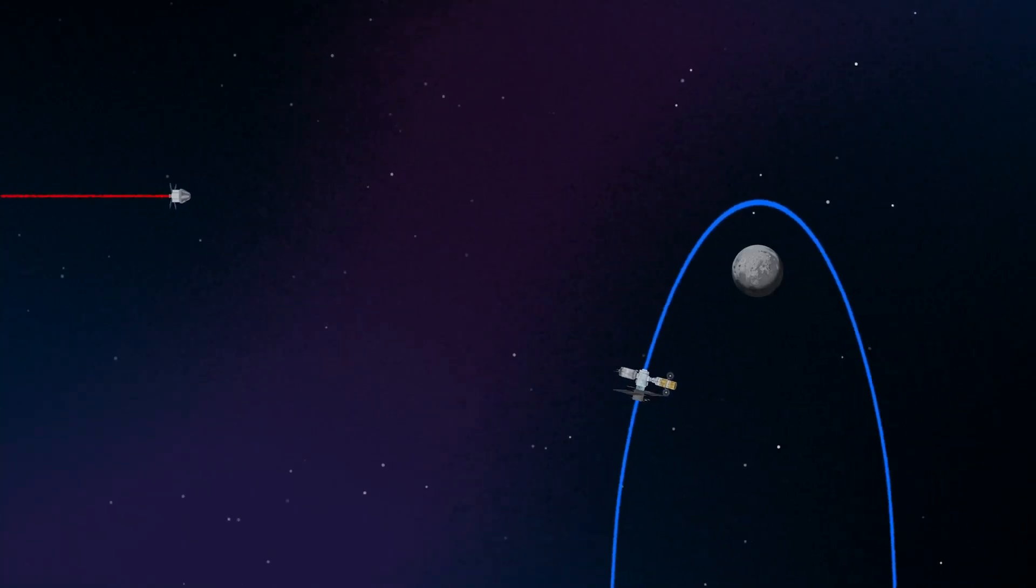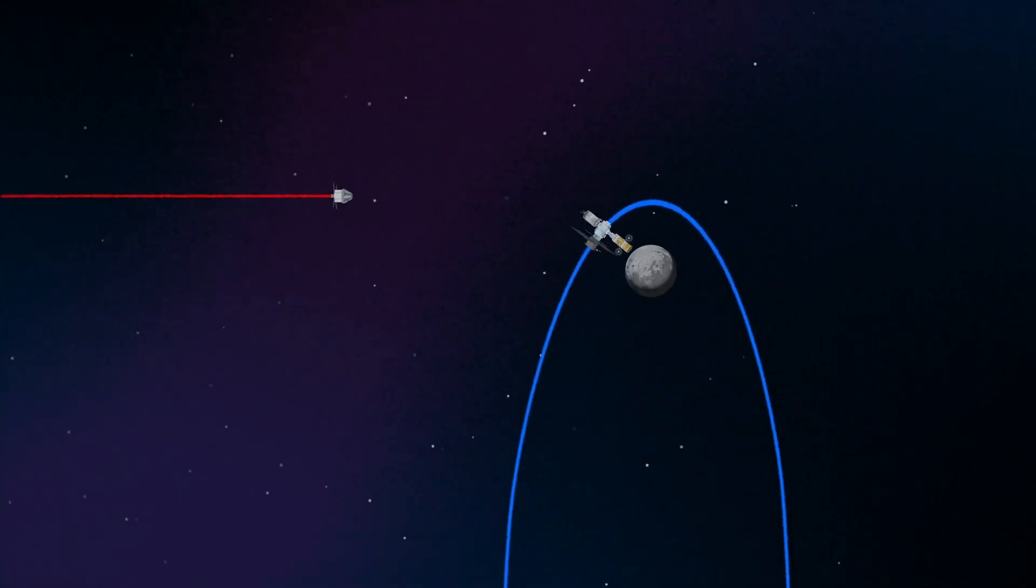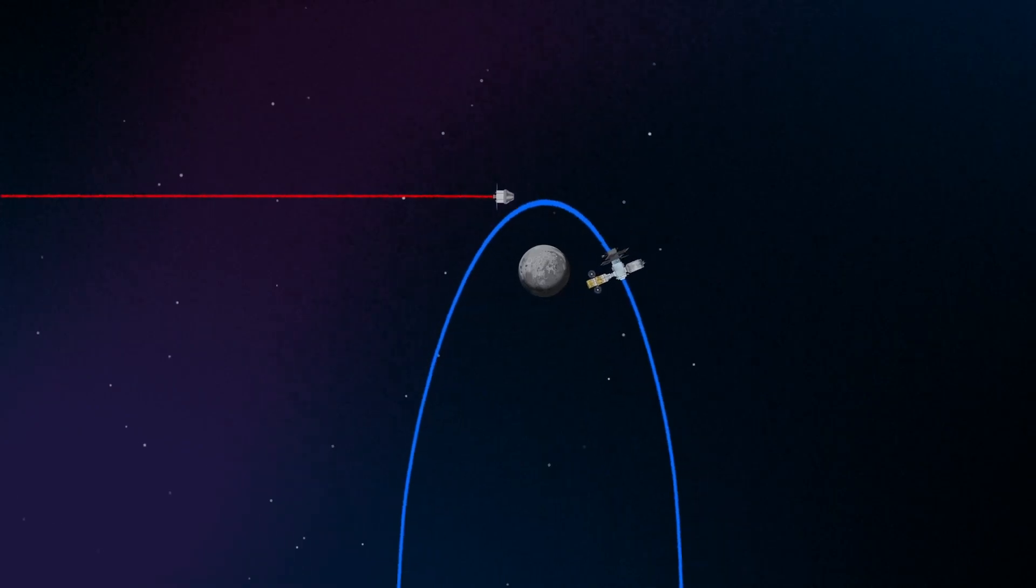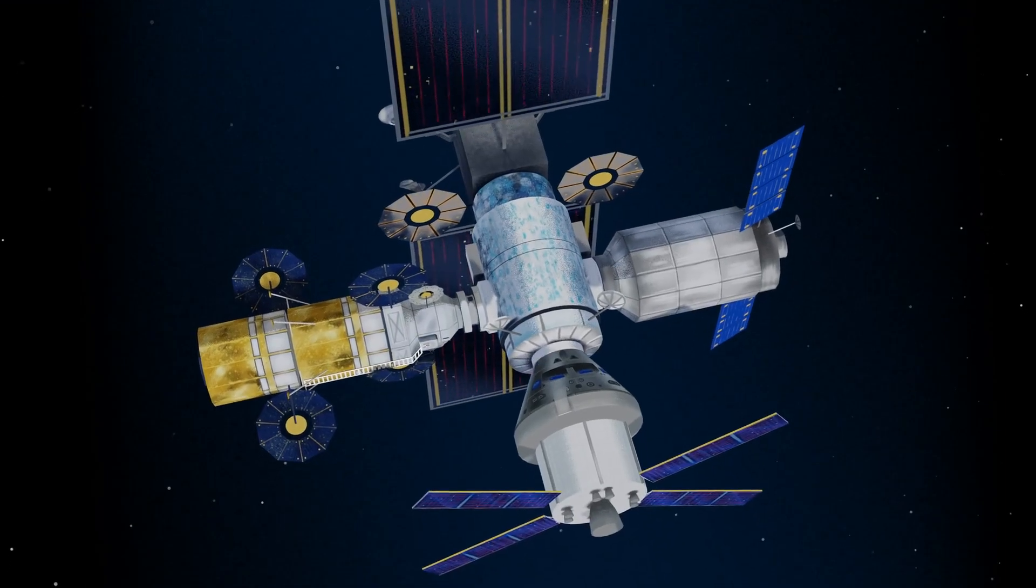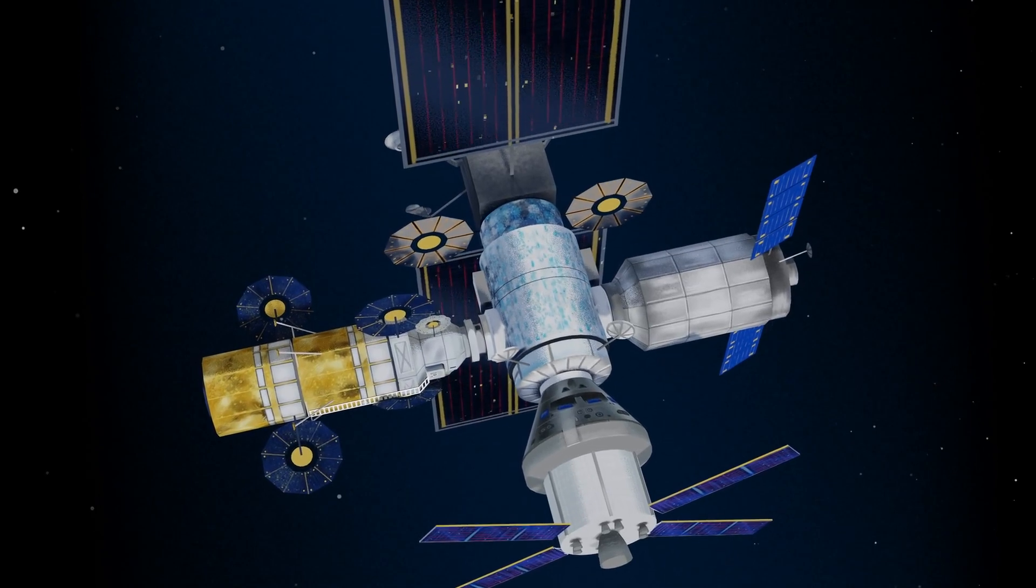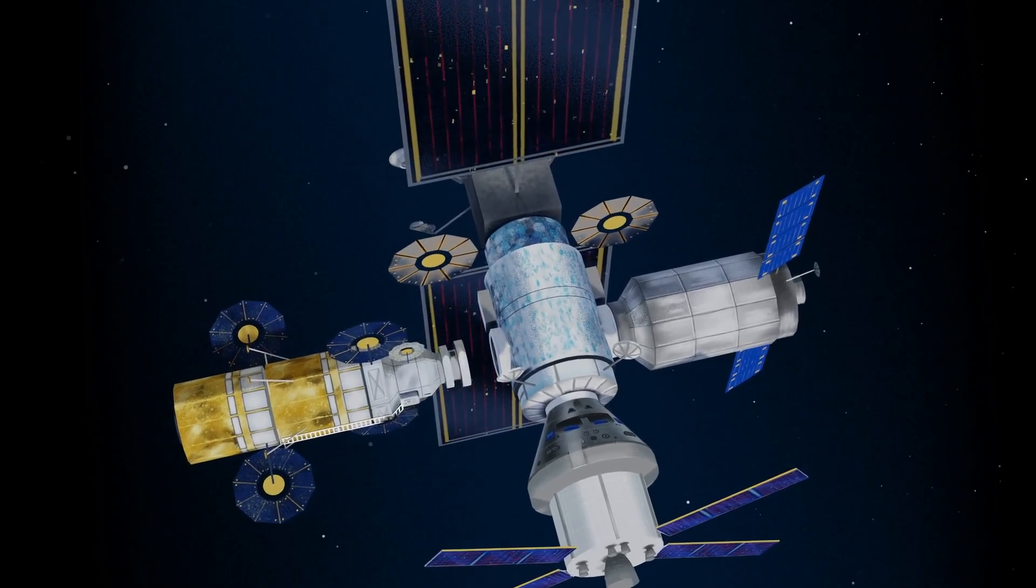Returning to our crew as they approach Gateway, the Orion must match the elliptical orbit of the station in order to successfully dock. Once on board, pre-selected crew members transfer to the lunar lander, while those assigned to Gateway remain on station.